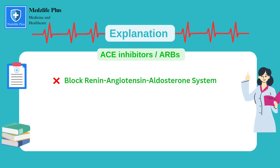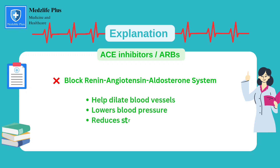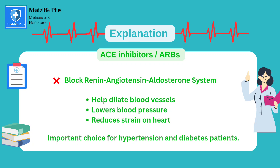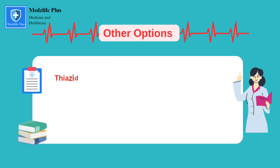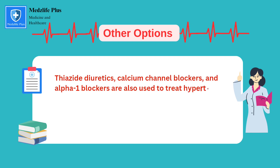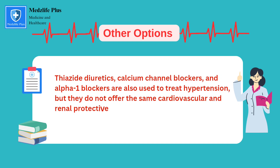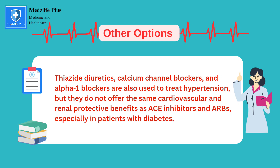ACE inhibitors and ARBs work by blocking the renin-angiotensin-aldosterone system, which plays a critical role in regulating blood pressure. By inhibiting this system, these medications help dilate blood vessels, lower blood pressure, and reduce the strain on the heart. Additionally, they protect the kidneys from the harmful effects of high blood pressure and diabetes-related kidney damage. Thiazide diuretics, calcium channel blockers, and alpha-1 blockers do not offer the same cardiovascular and renal protective benefits as ACE inhibitors and ARBs, especially in patients with diabetes.